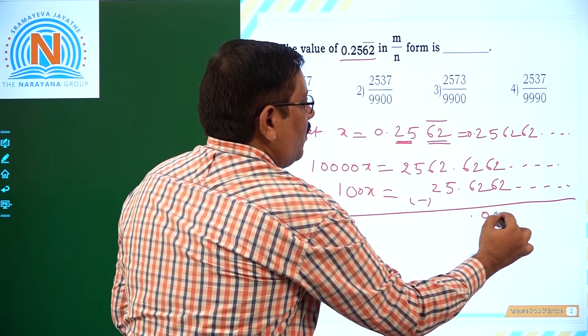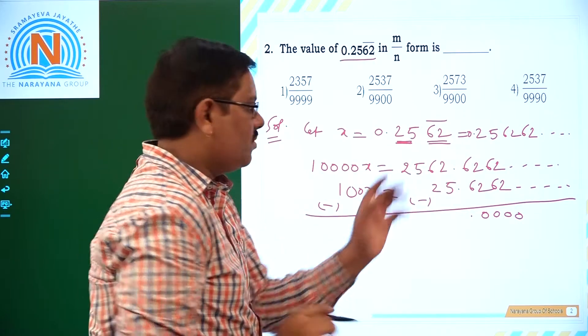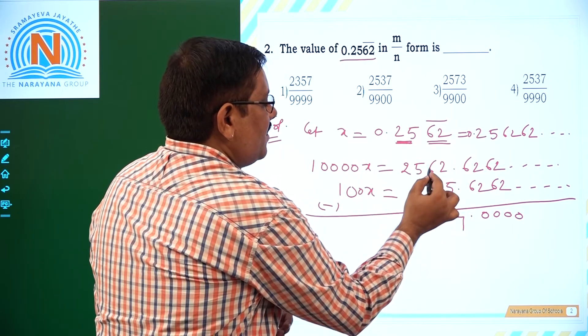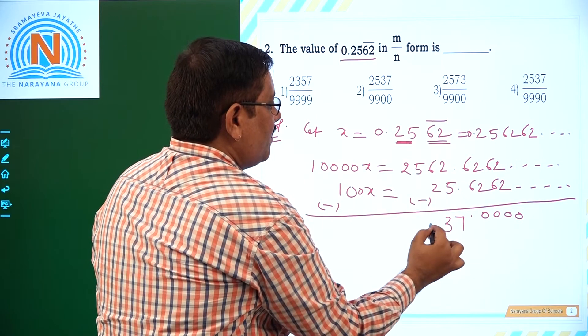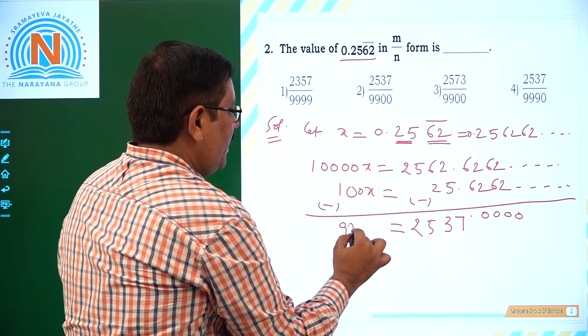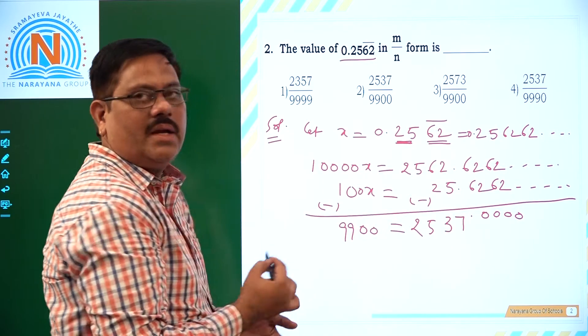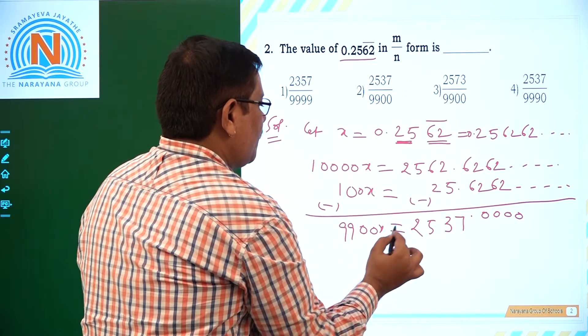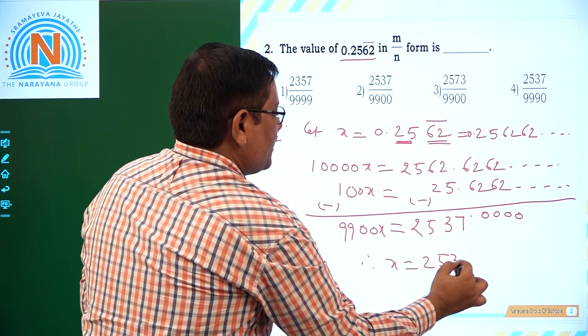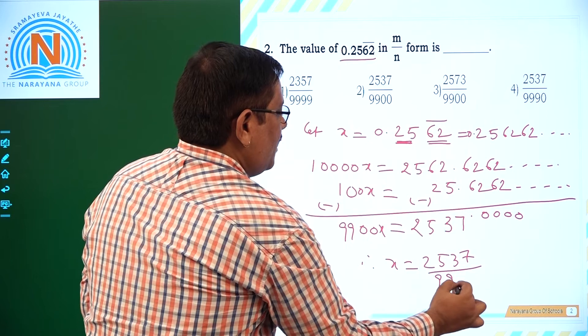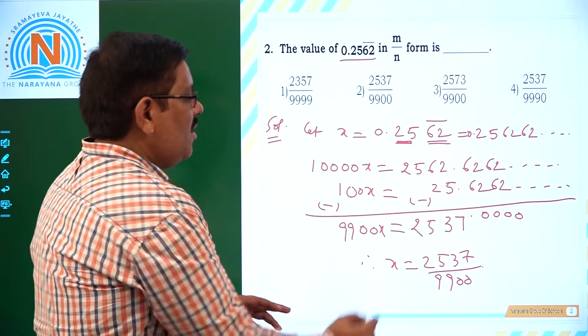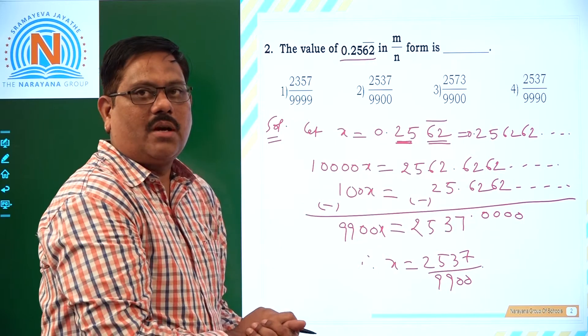We have to see that after decimal, we have only recurring decimals, recurring digits. Then what happens if you subtract one from the other, these 2 will be cancelled. This is very very important step. Let us subtract now. Here of course after decimal all will become 0 which are of no use. They have no value. This is 12 minus 5, that is 7. This is 5 minus 2, that is 3. This is of course 5, 2. That is equal to, here it is how much? 99, 100, 9900. 9900x is equal to 2537. Then what is x now? 2537 by 9900.